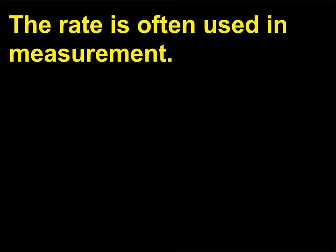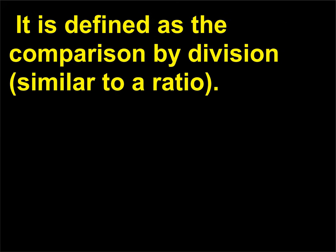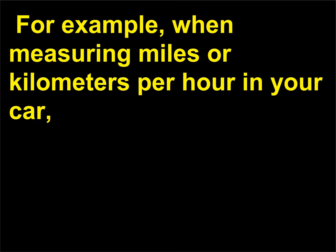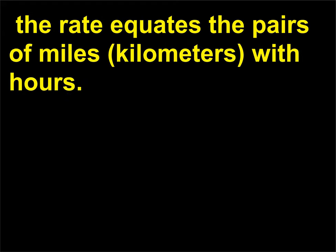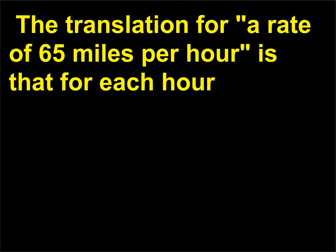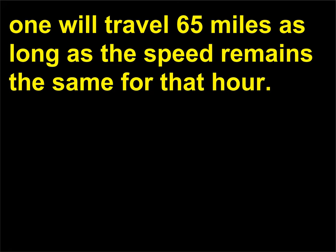The rate is often used in measurement. It is defined as the comparison by division, similar to a ratio. For example, when measuring miles or kilometers per hour in your car, the rate equates the pairs of miles (kilometers) with hours. The translation for a rate of 65 miles per hour is that for each hour, one will travel 65 miles as long as the speed remains the same for that hour.